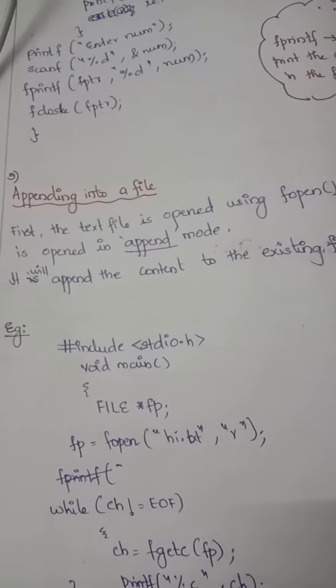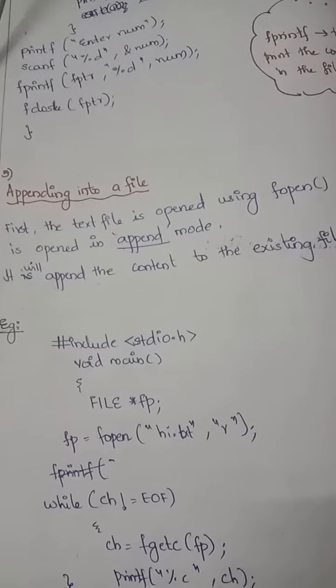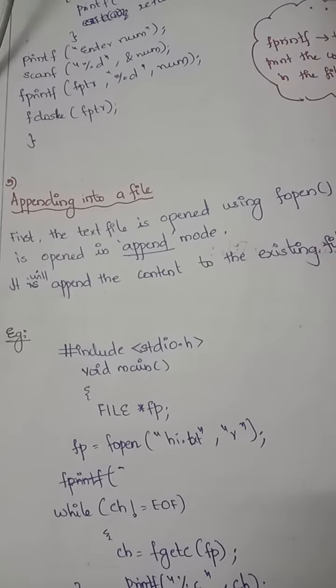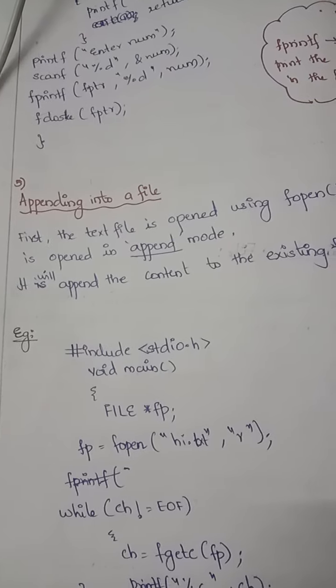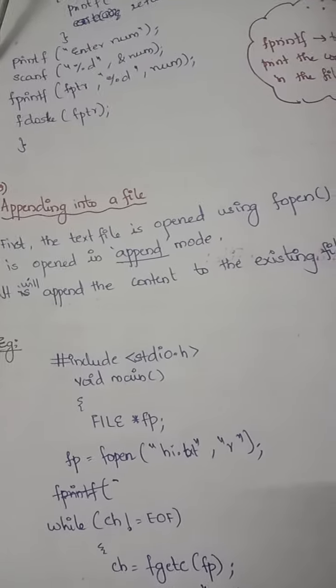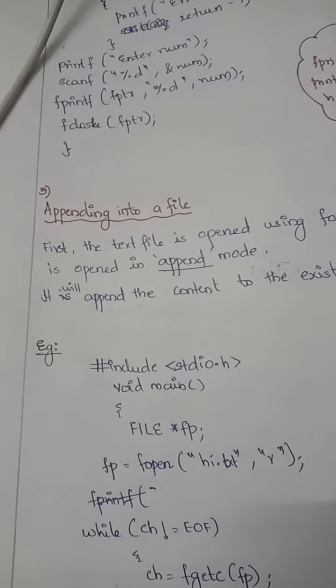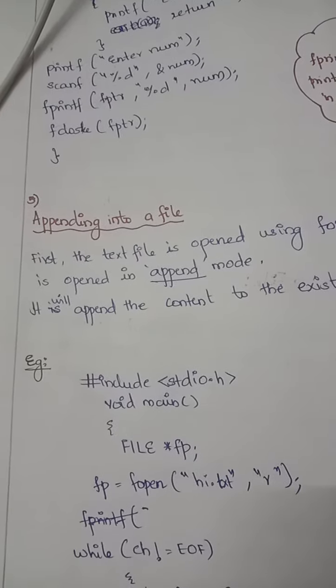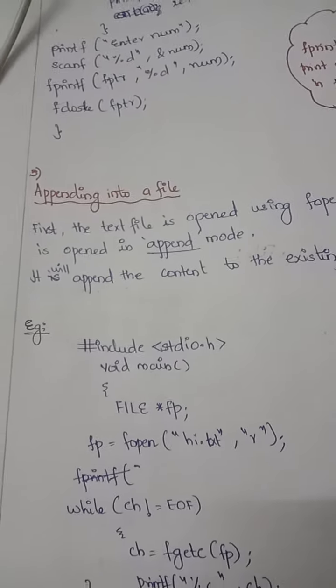It will append the content to the existing file. Appending is almost similar to writing, but writing creates or overwrites a file, whereas appending adds content to an existing file. Write mode is for writing content into a new file. Let's see how to append a file.